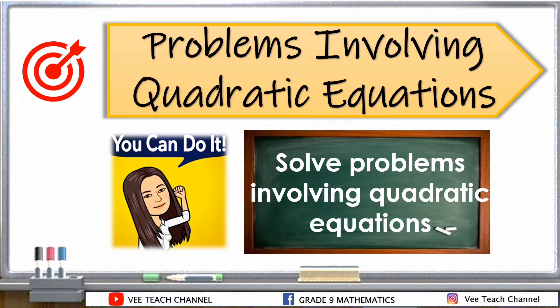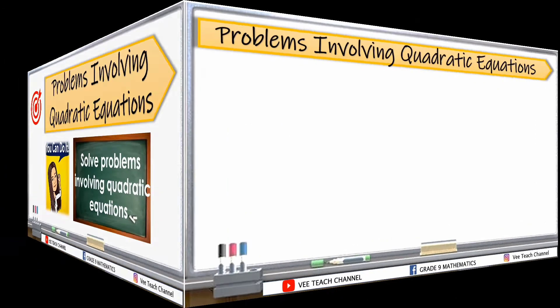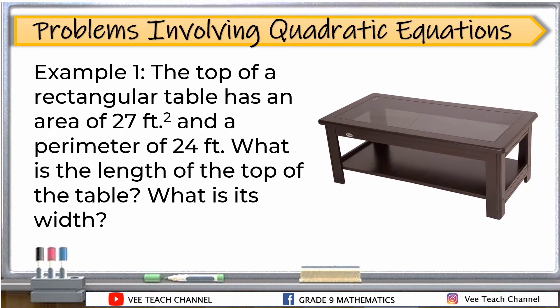So, let's see our example. Our first example is this: The top of a rectangular table has an area of 27 feet squared and a perimeter of 24 feet. What is the length of the top of the table? So, the first thing that we did in this problem is to read the problem and try to understand the problem given. Ano ba yung kailangan natin hanapin dito sa ating problem? Ano yung kailangan natin isolve?